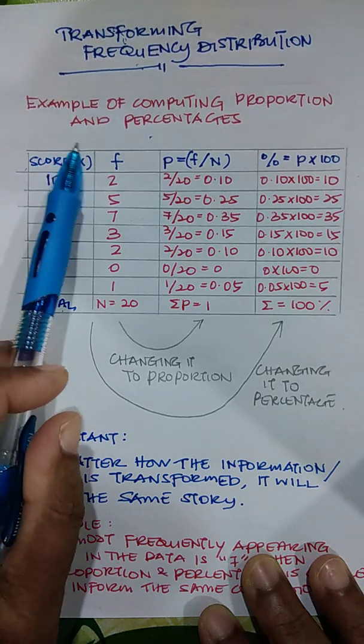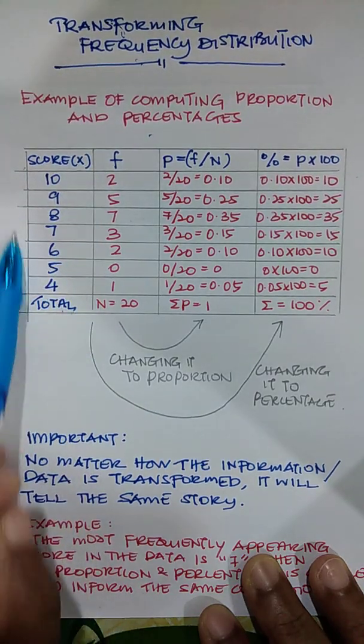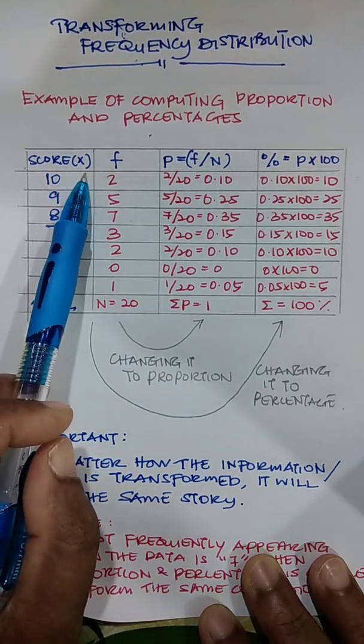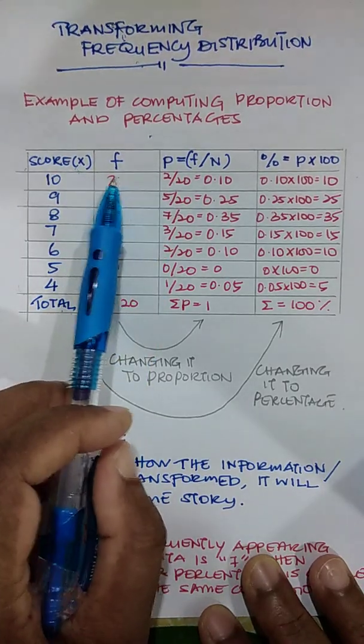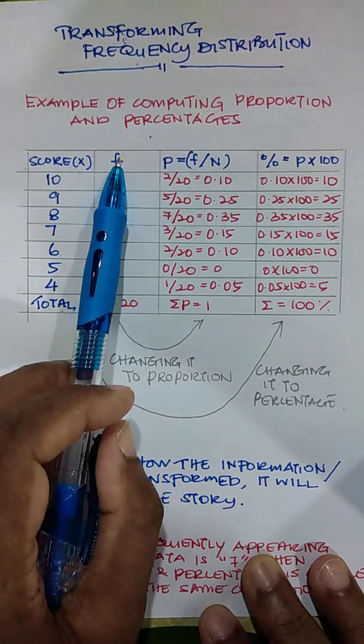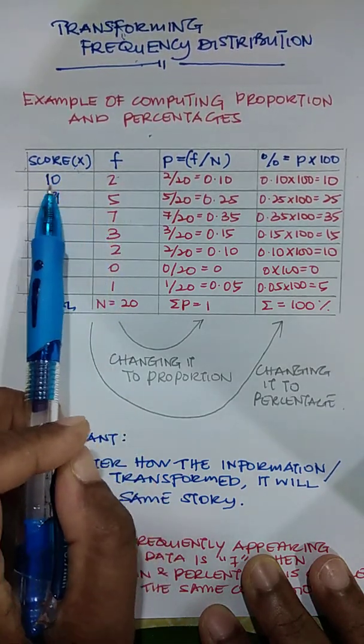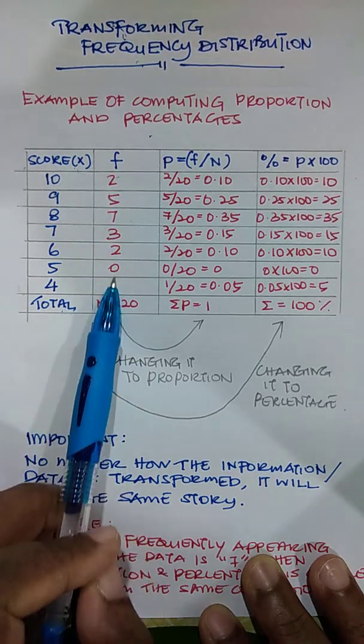If you notice, this is the scores that we get from our data or from the information that we gathered and we label it as X. And this is the frequency. F represents frequency, meaning how many times this score 10 appears on the data, on the information.